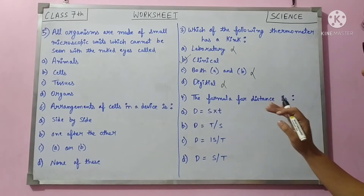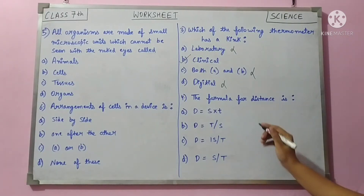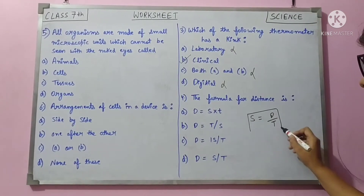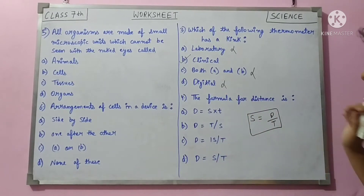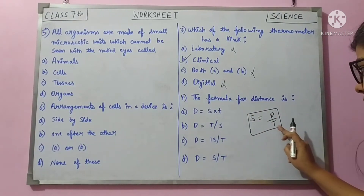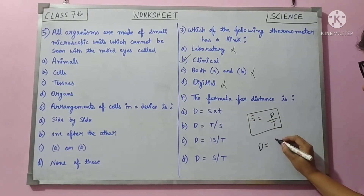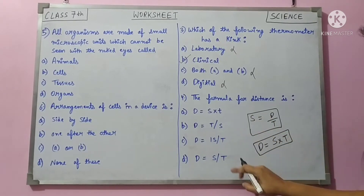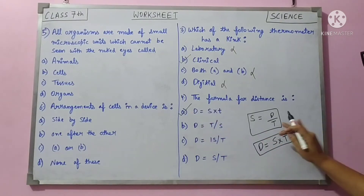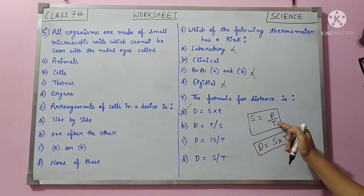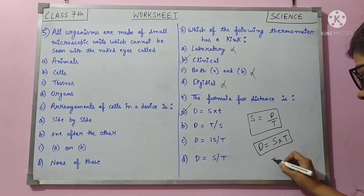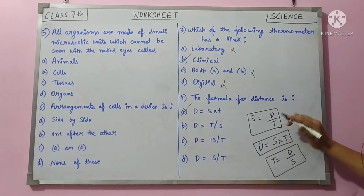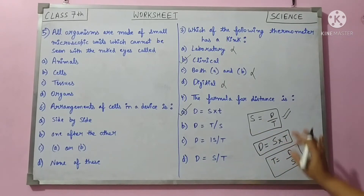The formula for distance: we know speed = distance / time. From this one formula you can derive any other. If you take time to the other side, distance = speed × time. So the formula for distance is speed × time, which is option A. Similarly, time = distance / speed. If you remember this basic speed formula, you can find distance and time both.